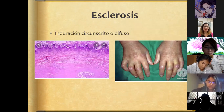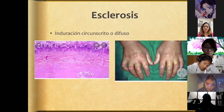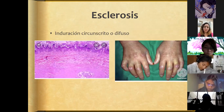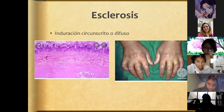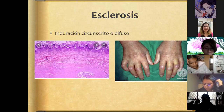Sclerosis translates as a circumscribed or diffuse induration. An example is scleroderma: the skin appears smooth, the person has difficulty extending their fingers because the skin has contracted. If we touched it, it would feel hardened with loss of the folds on the dorsum of the fingers. Histologically, it shows a denser dermis and subcutaneous cellular tissue — the problem predominates in the intermediate layer of the skin, the dermis.